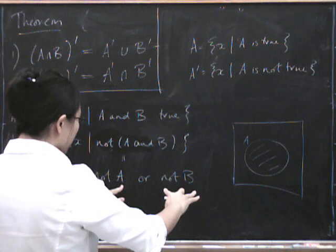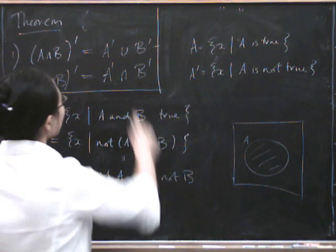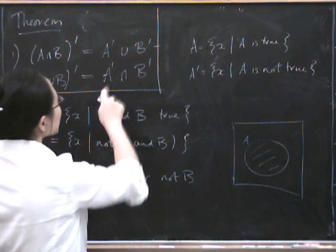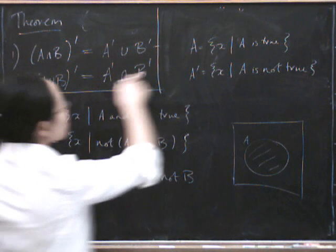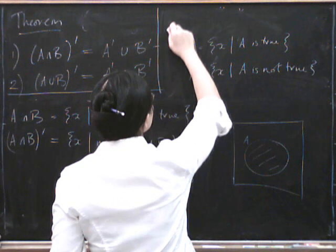Well NOT A OR NOT B. Oh, that's what this is, isn't it? Because this is NOT A and that's NOT B and the union is OR.